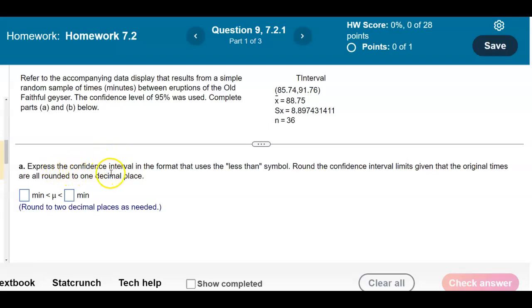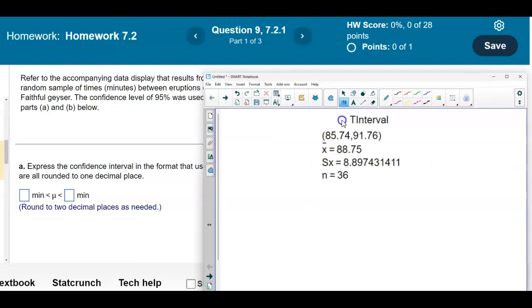In part A, it says express the confidence interval in the format that uses the less than symbol. Round the confidence interval limits given that the original times are all rounded to one decimal place. So let's go ahead and take a look at this display here.